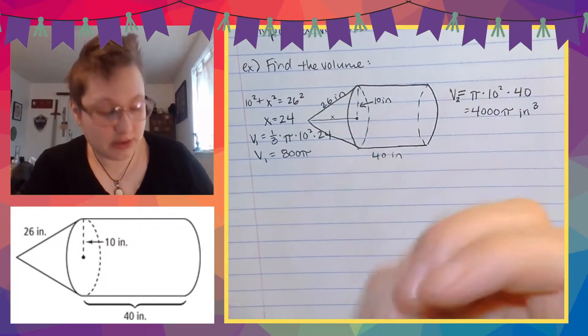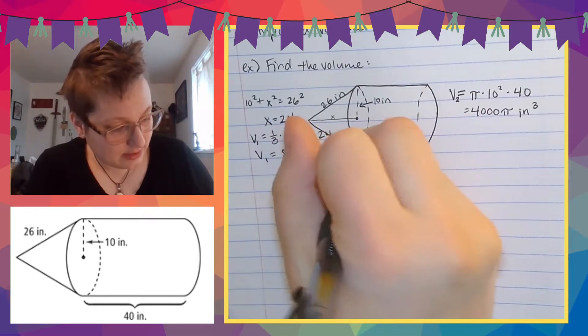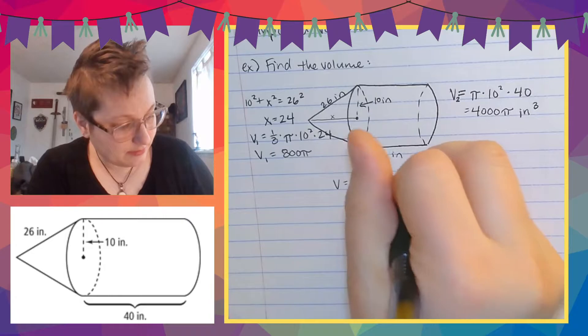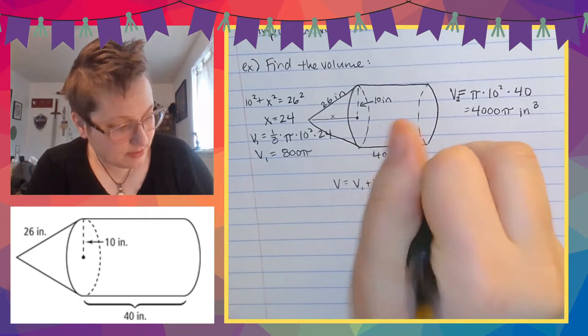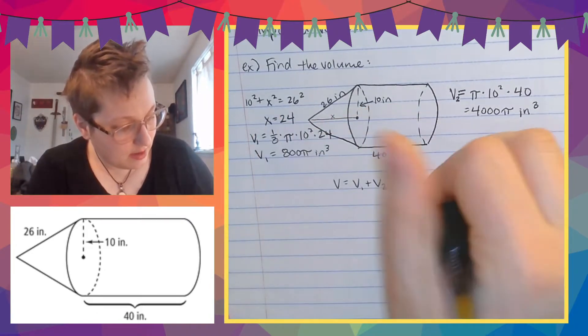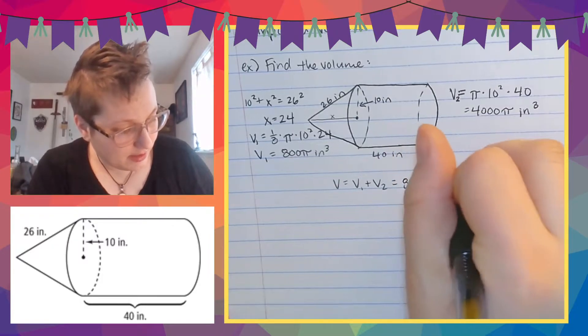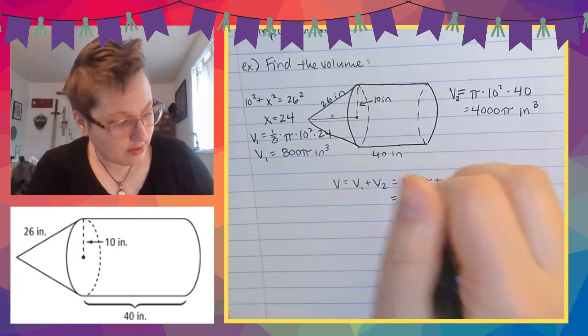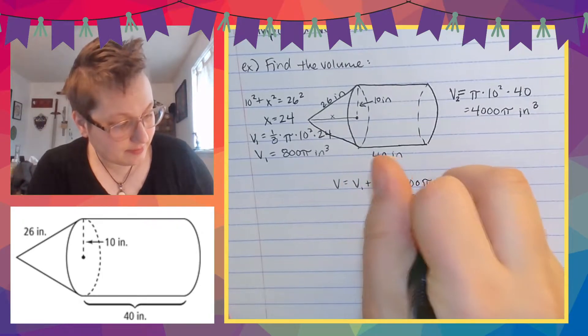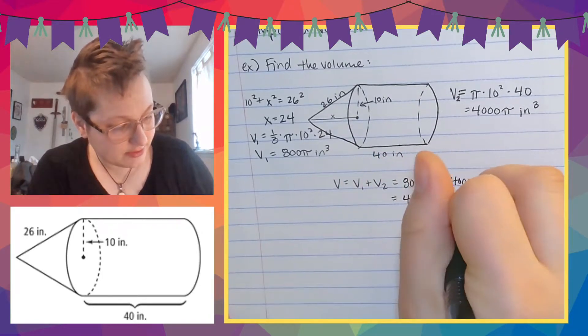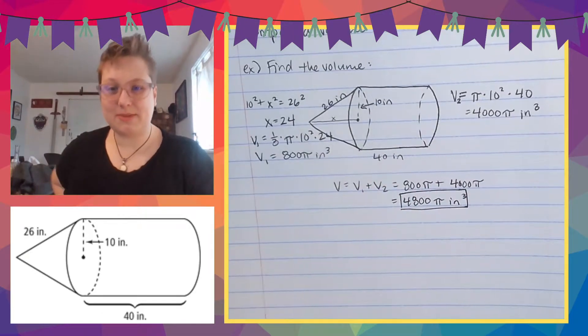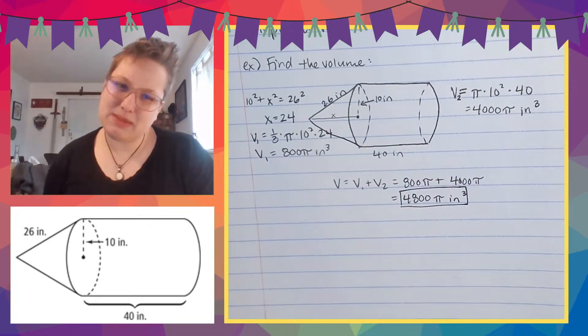So now the total volume, the whole volume of all of this equals volume one plus volume two, which is going to be 800 pi, oops, cubic inches, plus 4,000 pi cubic inches, which equals 4,800 pi cubic inches. And we got it. So that's how we do it. Let's do a couple more, maybe, maybe at least one more.